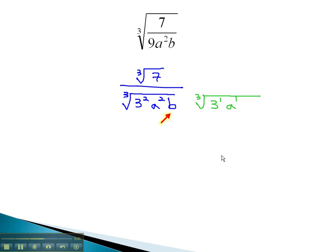However, with the b's, there is only 1 b there to get us started. To divide by the exponent of 3, we will need 2 more b's. This is what we need to multiply by in order to clear the radical. We will do the same thing on top, multiplying by the cubed root of 3a, b squared.